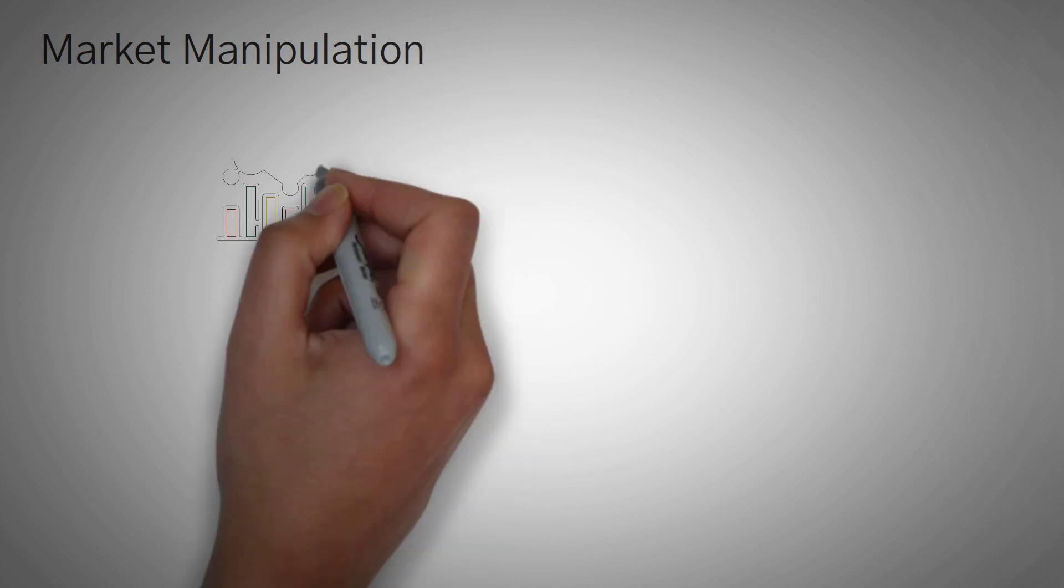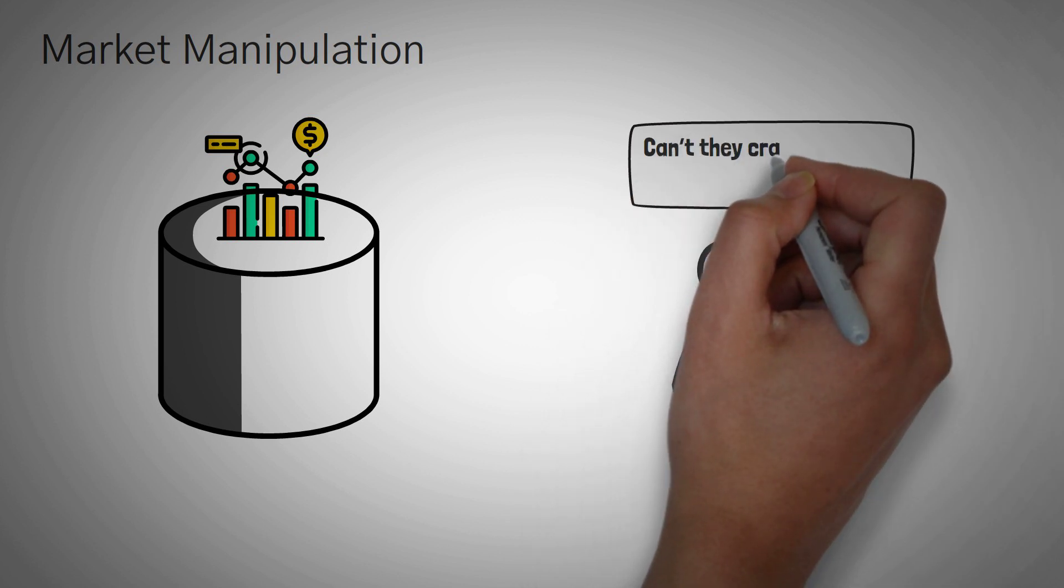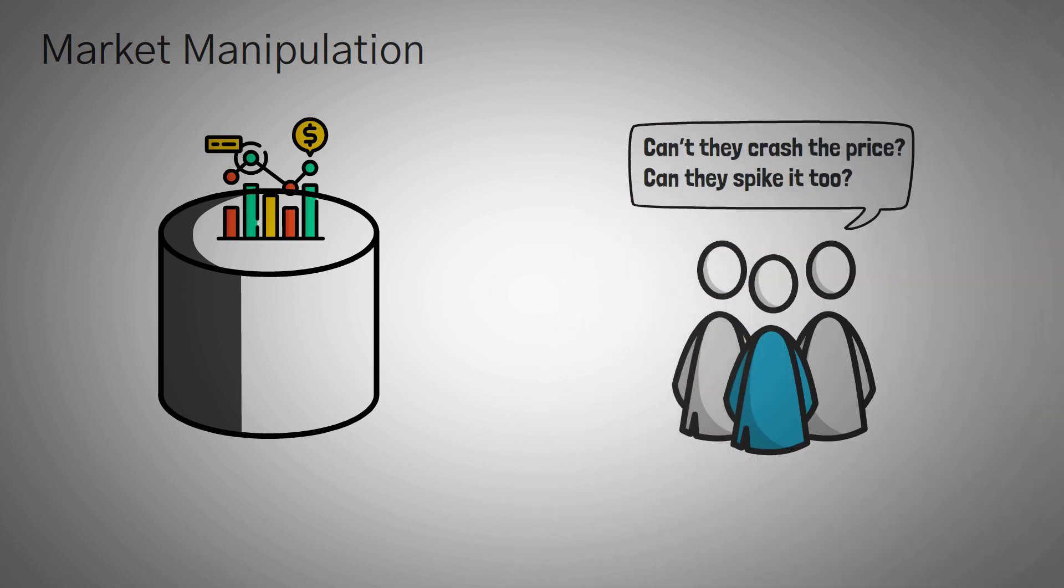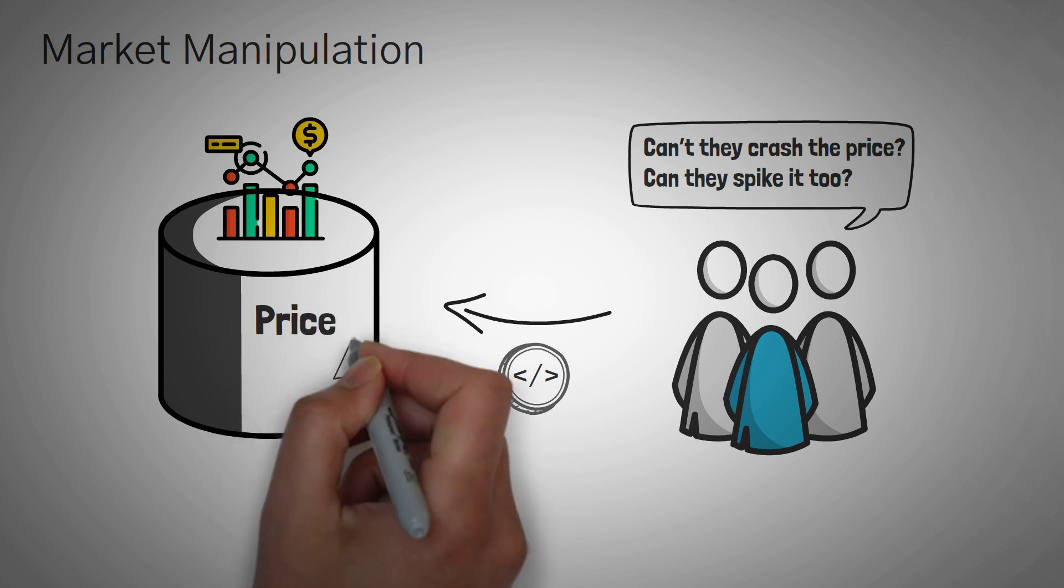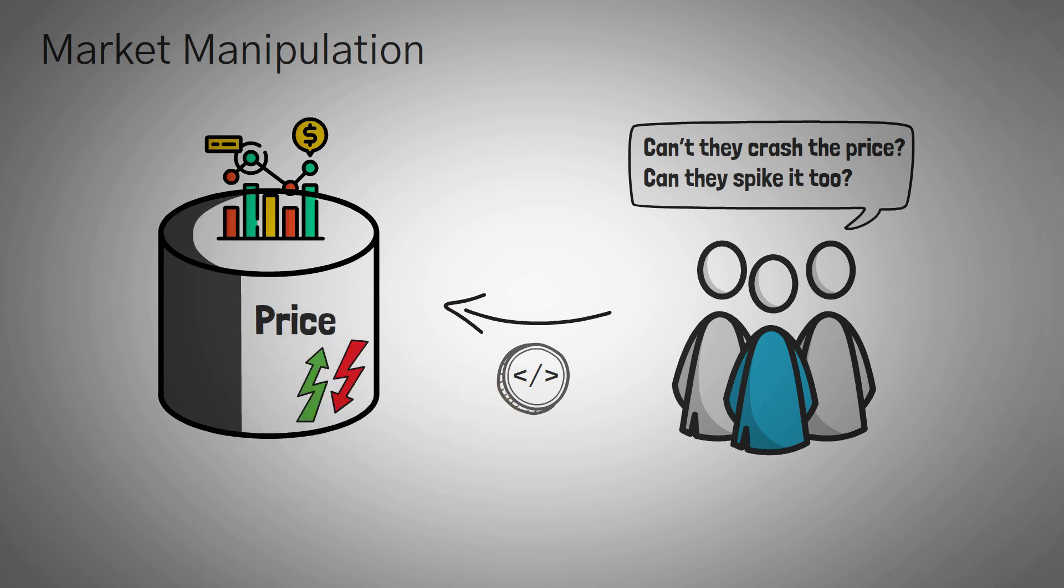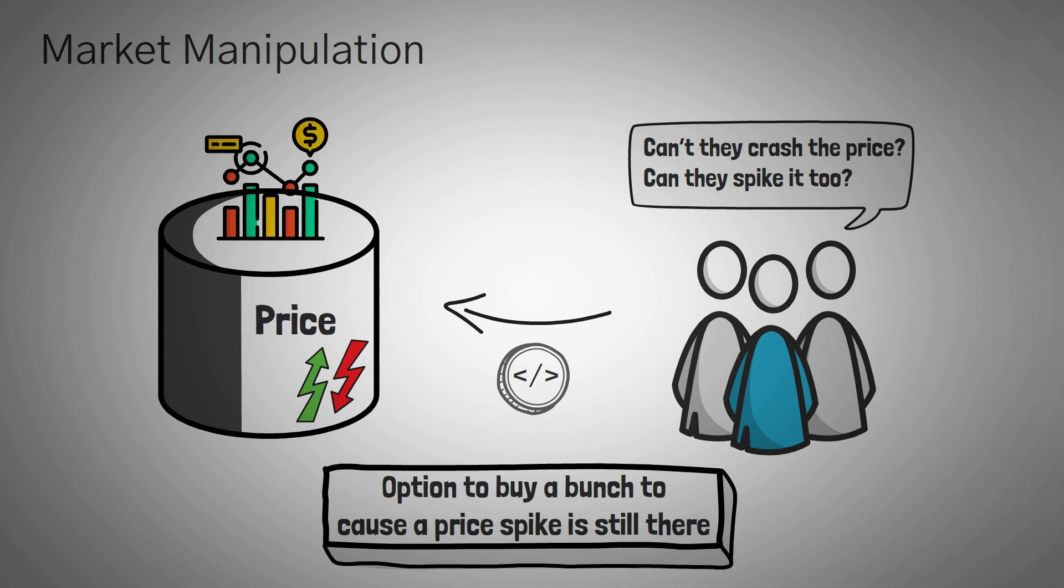Next up, we're going to talk about market manipulation, because market manipulation is probably the largest concern investors have when they first hear about dark pools. Can't they crash the price? Can they spike it too? Well, in fact, that is one of the reasons these investors are actually using a dark pool. They want to trade their crypto without causing huge price volatilities. Nevertheless, moving large amounts of money can always cause price volatility, so the option for that investor to come back in as a non-anonymous user and buy a bunch of Bitcoin to cause a price spike is still there.